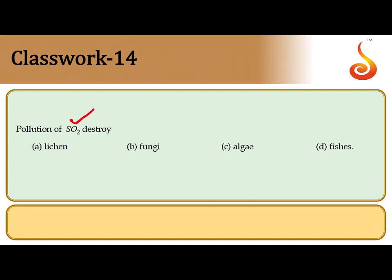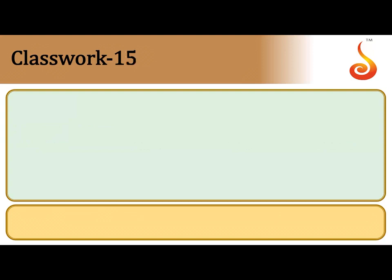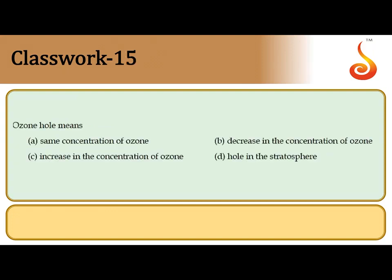The 14th question is about sulfur dioxide pollution. When there is a lot of SO₂ in the air, it causes acid rain. Certain bio-indicators called lichens show drastically reduced growth in response to oxides of sulfur in the air. In polluted areas, lichen growth on tree bark is absent, whereas abundant lichen growth indicates purer air free of pollution. The correct answer is option A.